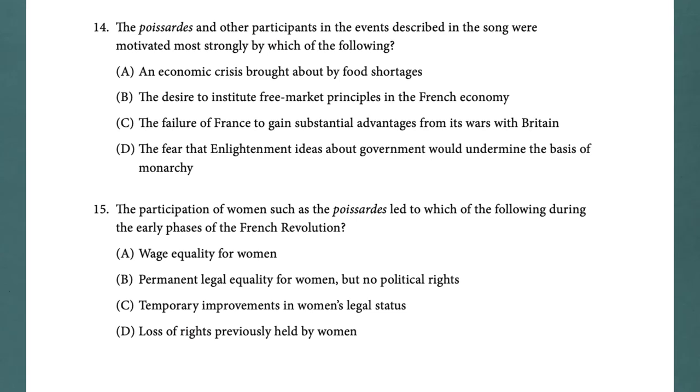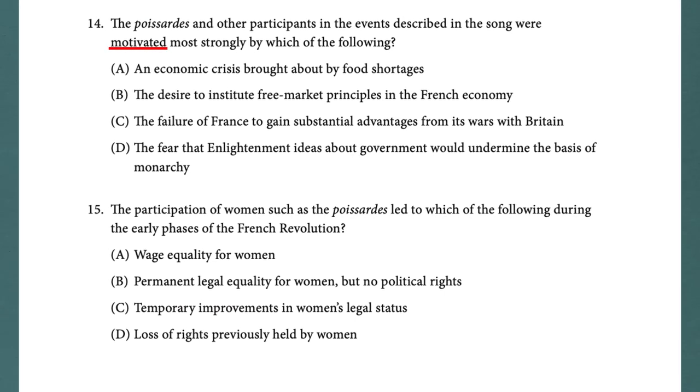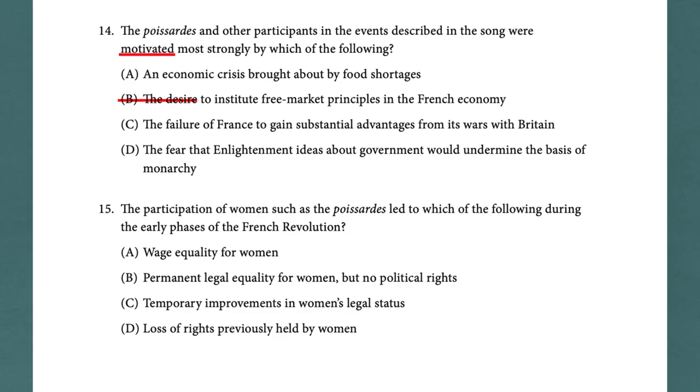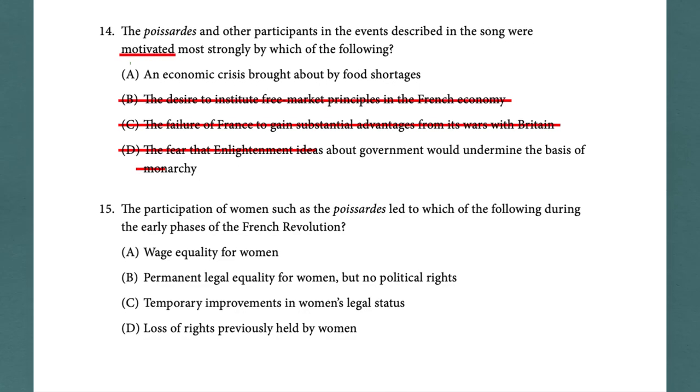The Poissard and other participants in the events described in the song were motivated most strongly by which of the following? B: The desire to institute free market principles in the French economy — that was more of an elite intellectual movement, not the concern of average women marching on Versailles. C: The failure of France to gain advantages from its wars with Britain — that's more of a state matter. D: The fear that Enlightenment ideas would undermine the monarchy — true, but more a concern of elite thinkers. The answer is A: an economic crisis brought about by food shortages. You can get that right from knowing history, but also because these are Paris market women — their concern is food shortages.